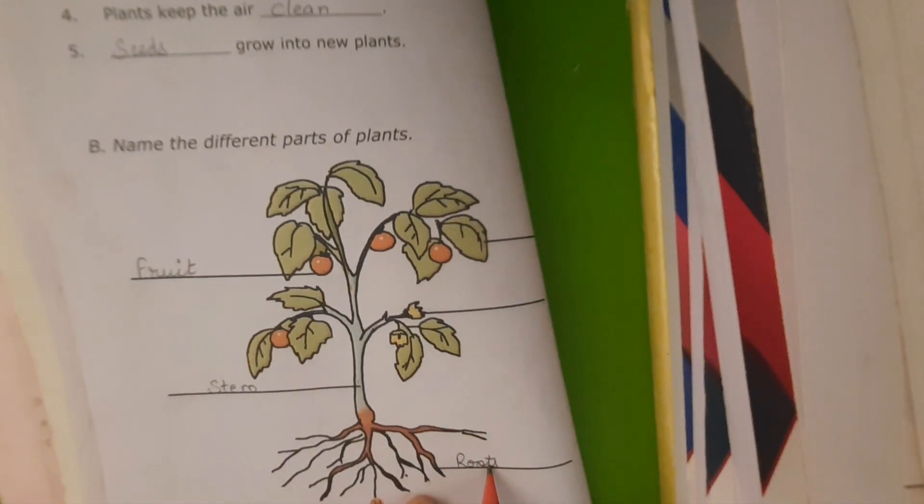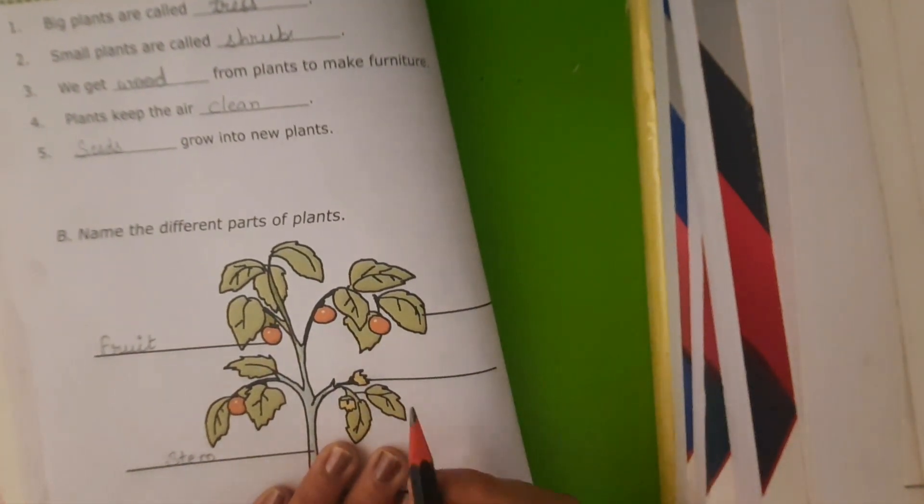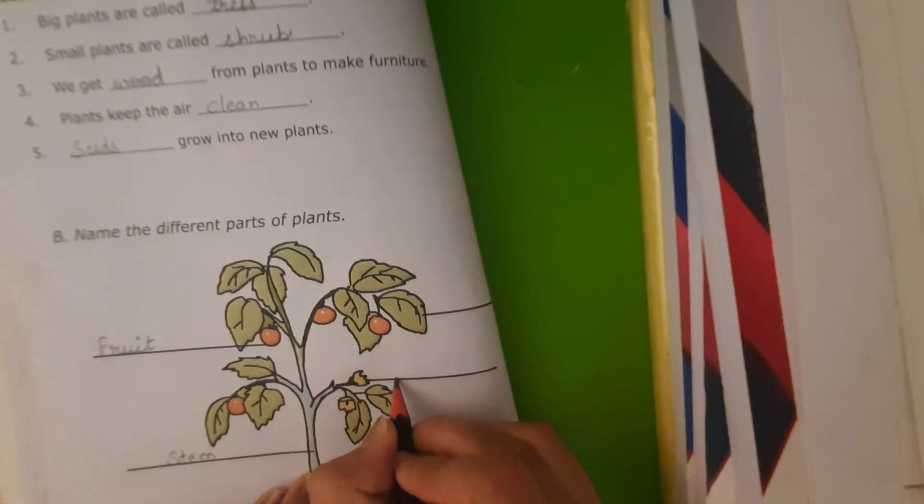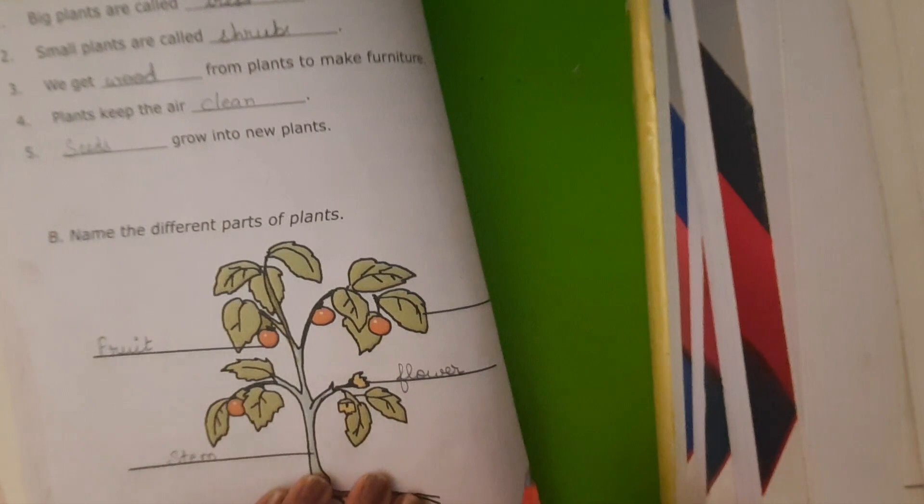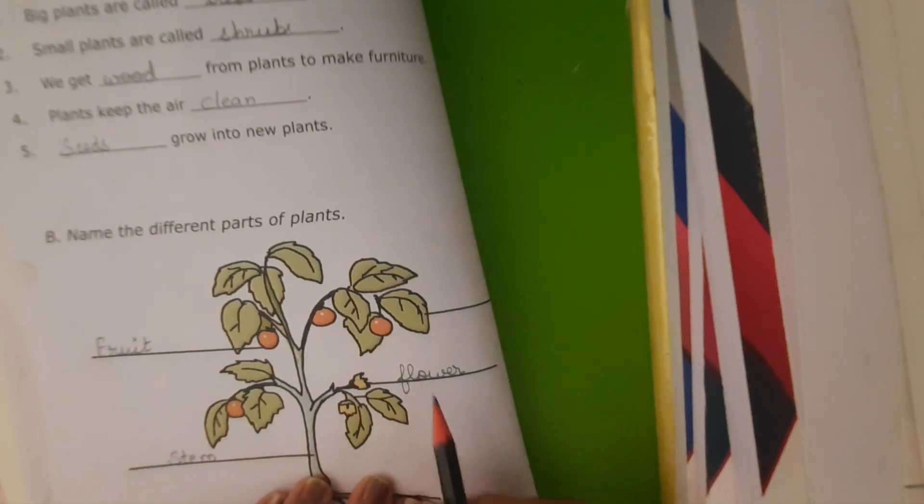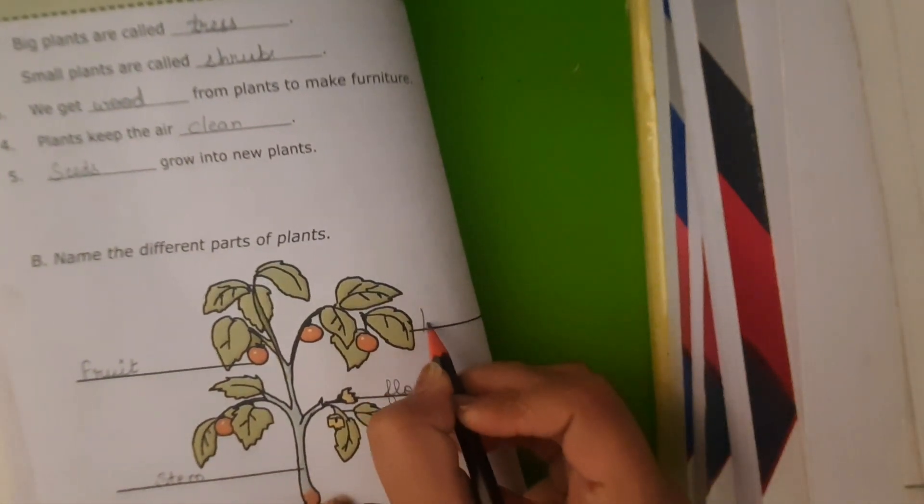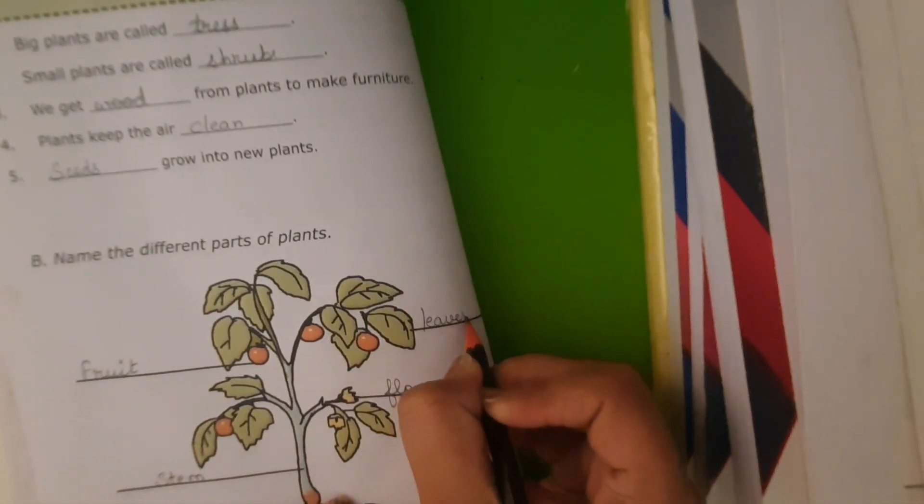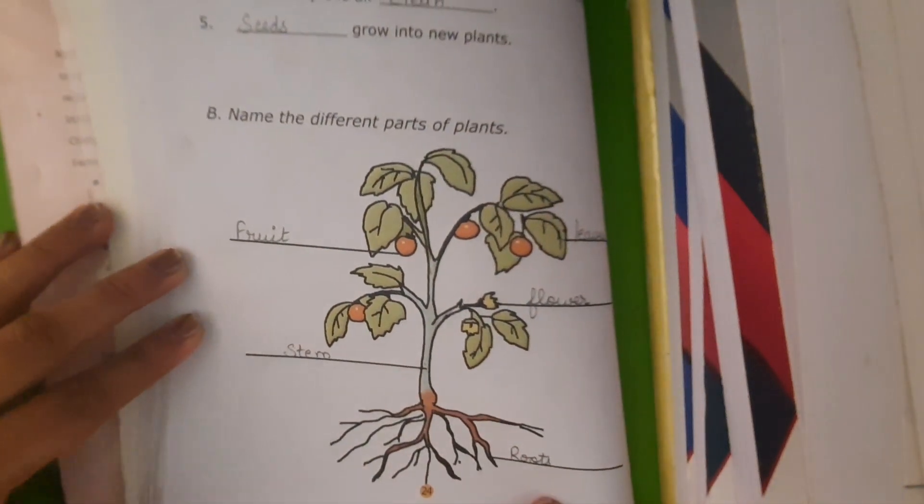These are roots. And which part is this? This is flower. And which part is this? Leaves. So these are different parts of a plant.